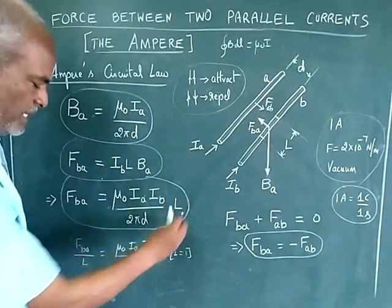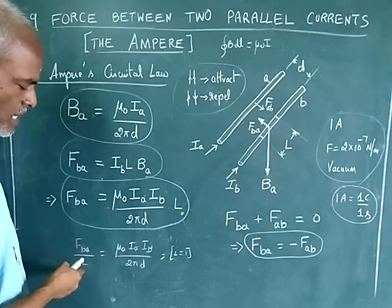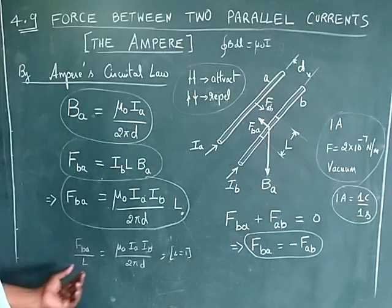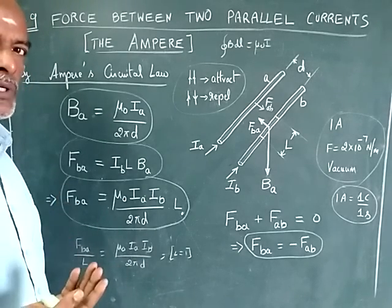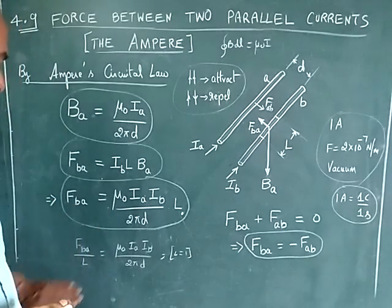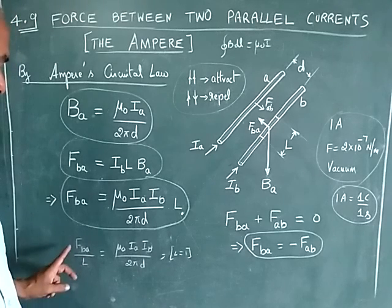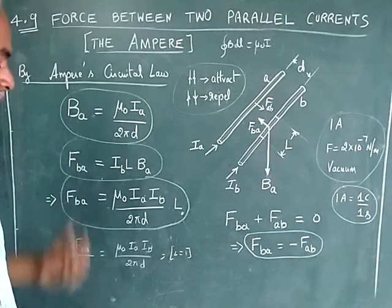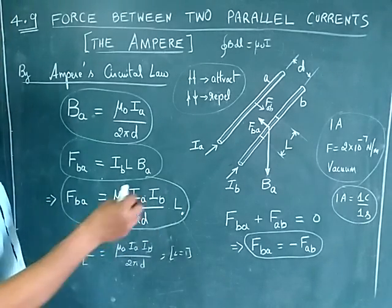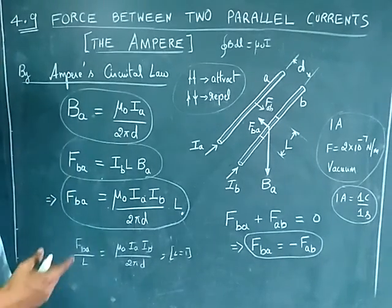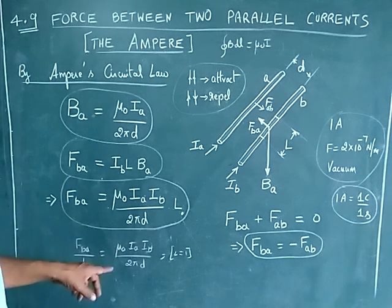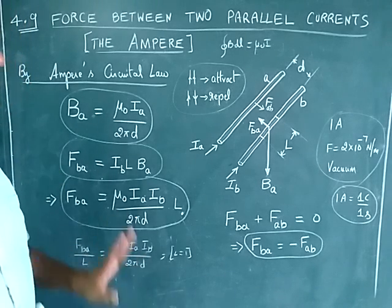Now, bringing L to the other side, FBA divided by L equals μ₀·IA·IB divided by 2πd. If we assume L equals 1 unit length, say 1 meter, then this gives the force per unit length. So FBA divided by 1 — force per unit length — is given by μ₀·IA·IB divided by 2πd.